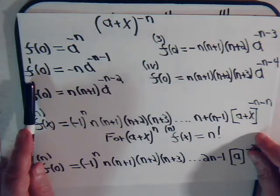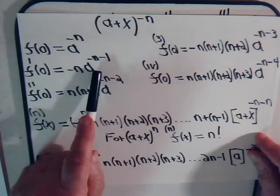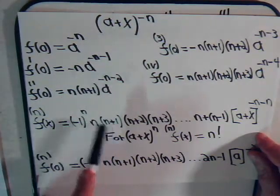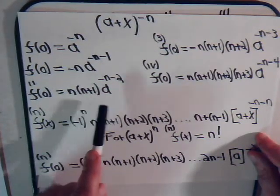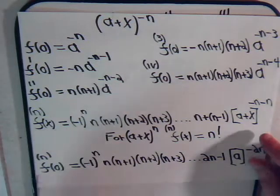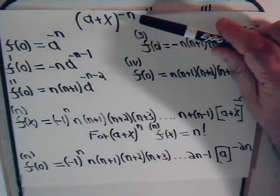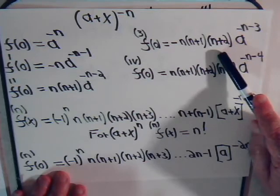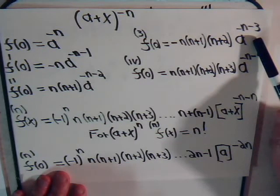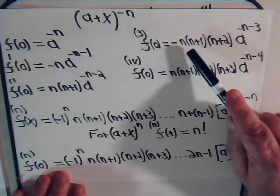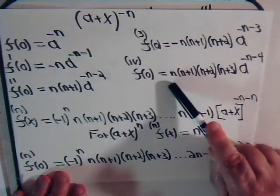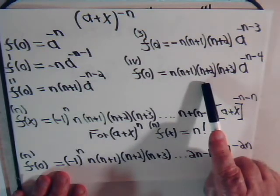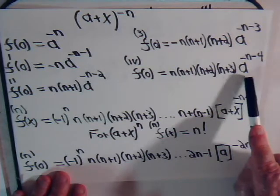The first derivative evaluated at 0 was minus n times a to the minus n minus 1. The second derivative evaluated when x is 0 is equal to positive n times n plus 1 times a to the minus n minus 2. The third derivative evaluated at x equals 0 has a minus sign: n times n plus 1 times n plus 2 times a to the minus n minus 3. The fourth derivative is positive, and when it's an odd number we have a negative — n times n plus 1 times n plus 2 times n plus 3 times a to the minus n minus 4.